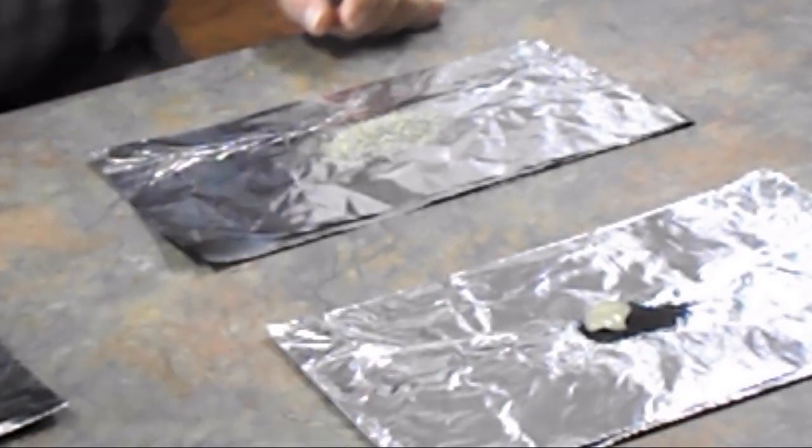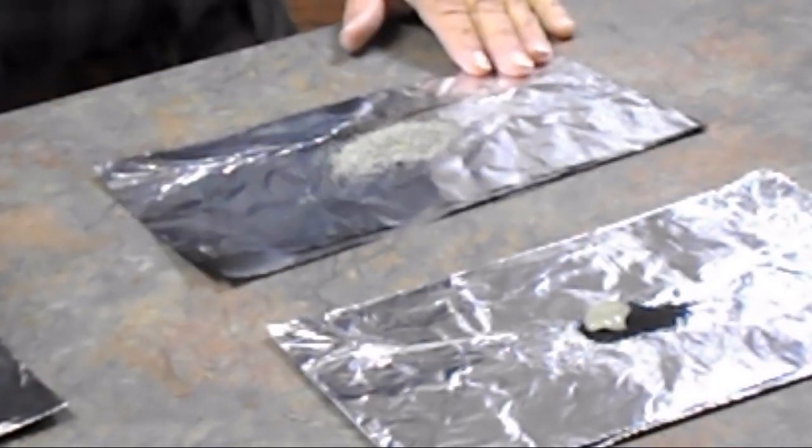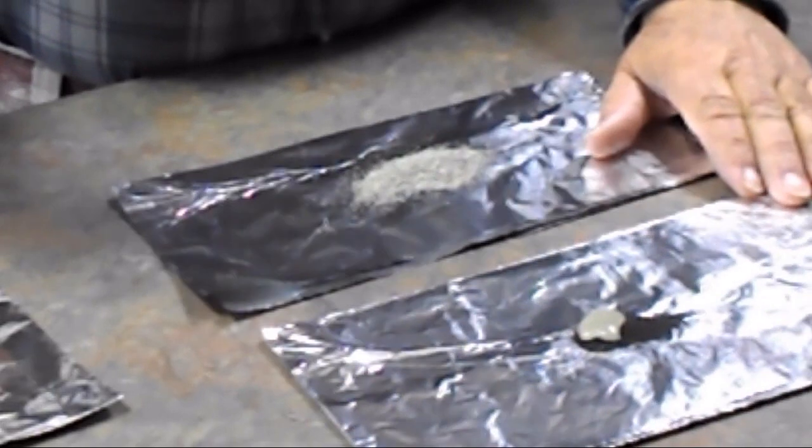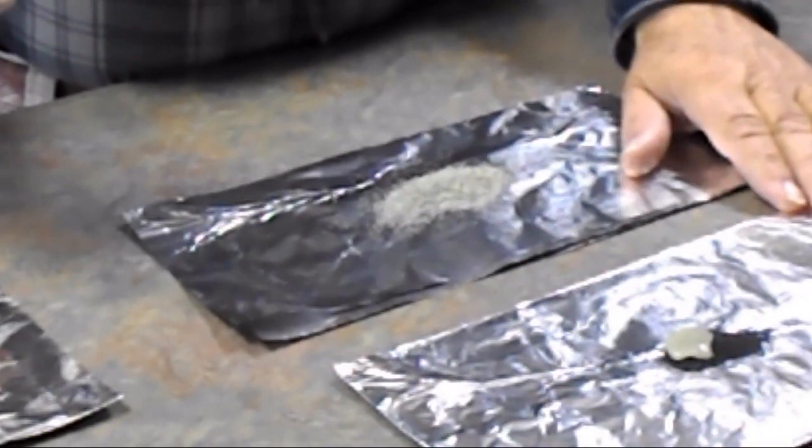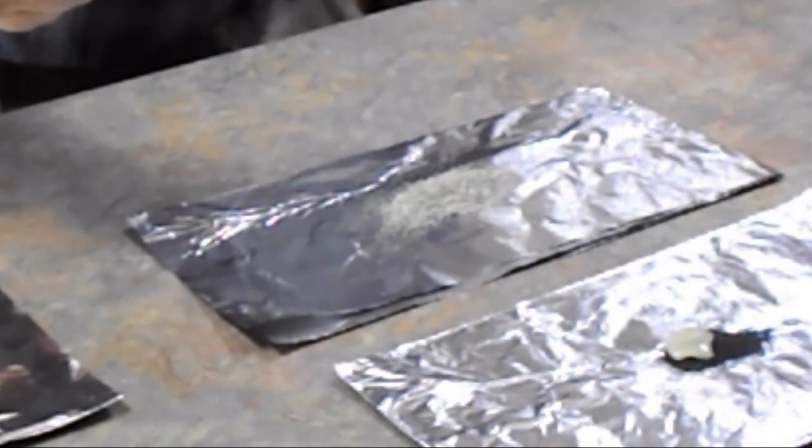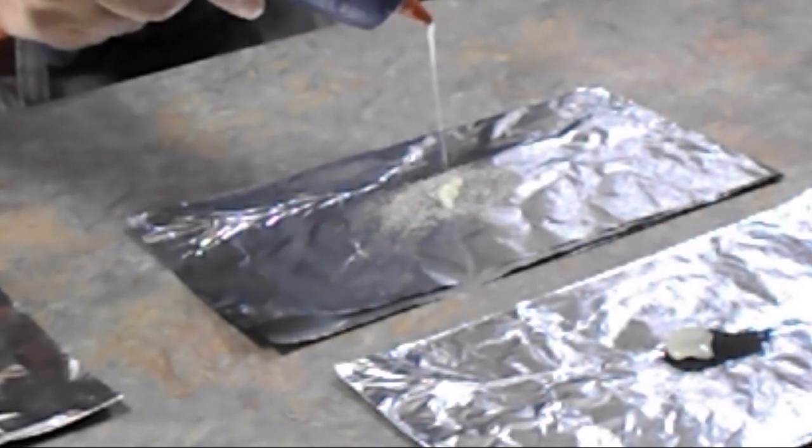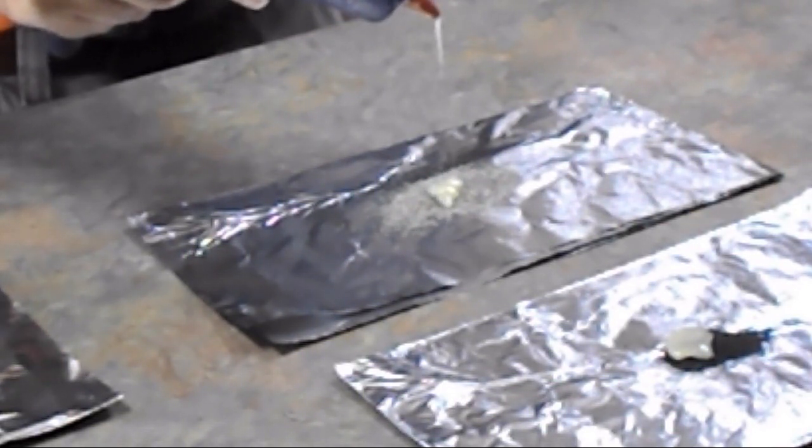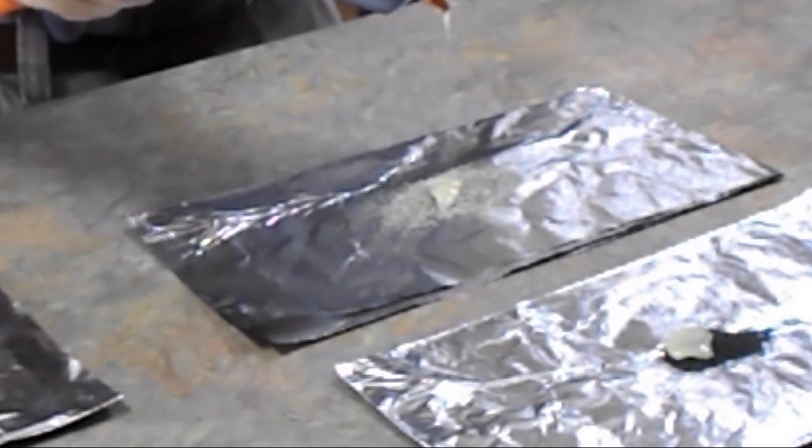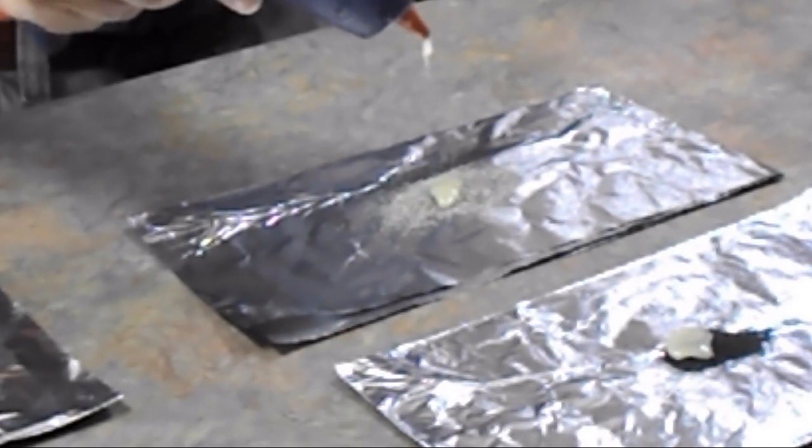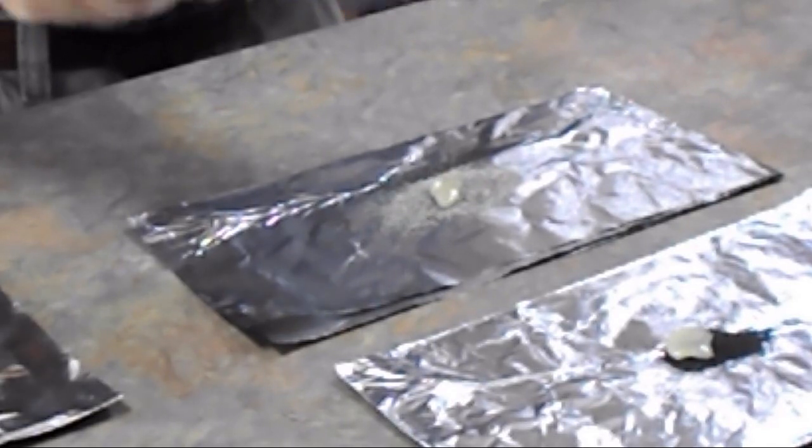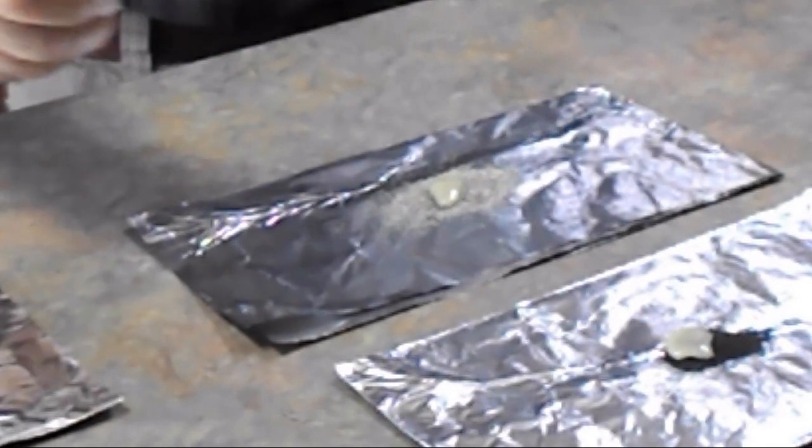All right, so did not set off the black powder. We'll see if it'll set off smokeless powder. That stuff is hot too, you see it's smoking. I mean if I put the tip there it would probably set it off, but I want to see if the glue itself would set it off and it doesn't.